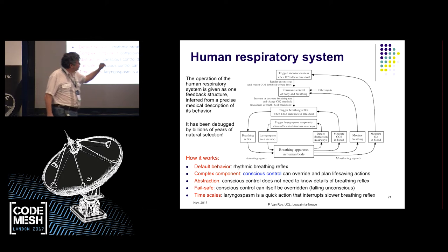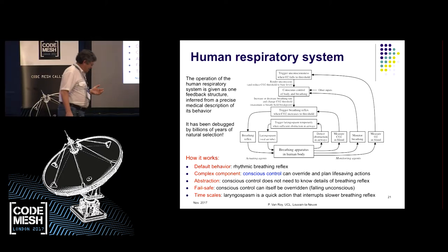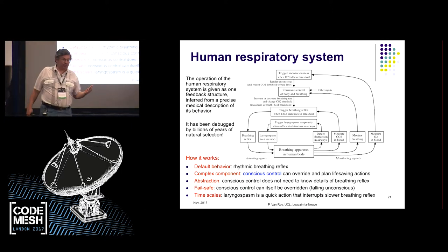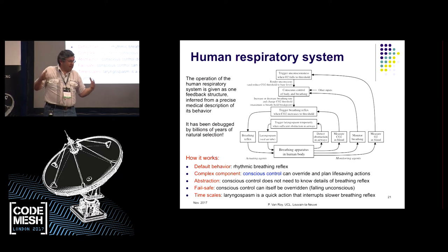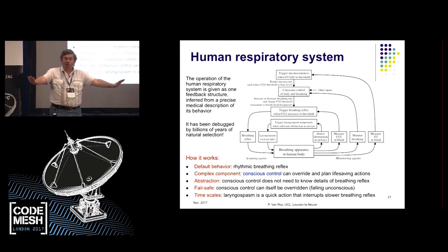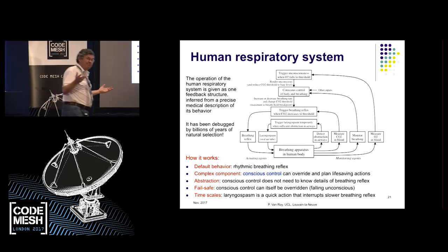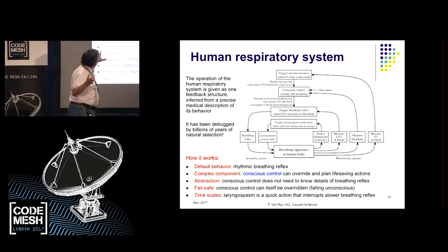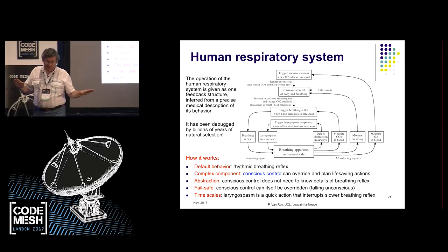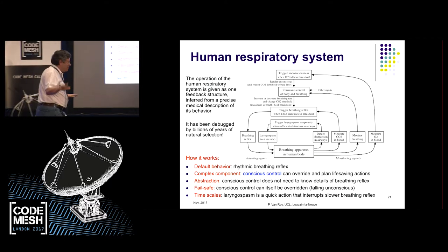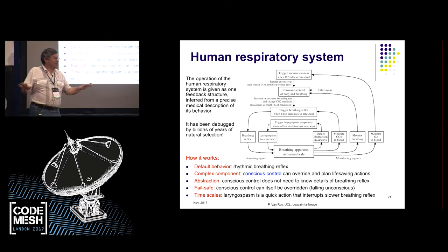The breathing system was debugged by evolution over billions of years; it's very, very reliable. In general there's no problem. Other things can happen that are more complicated: I'm driving a car and somehow fall into a lake, and the car starts sinking. I don't want my breathing reflex to work while submerged in water. There's another component called conscious control — the third loop takes control.